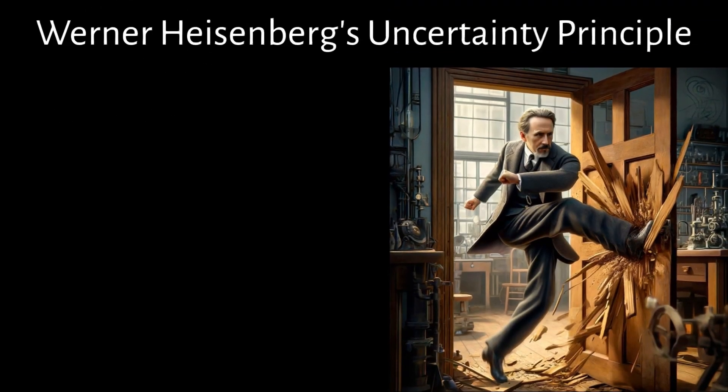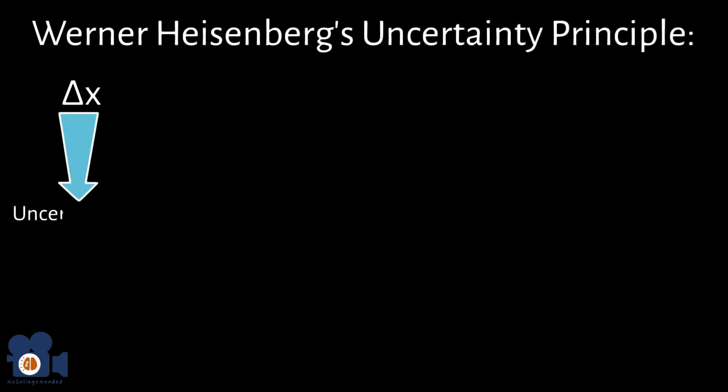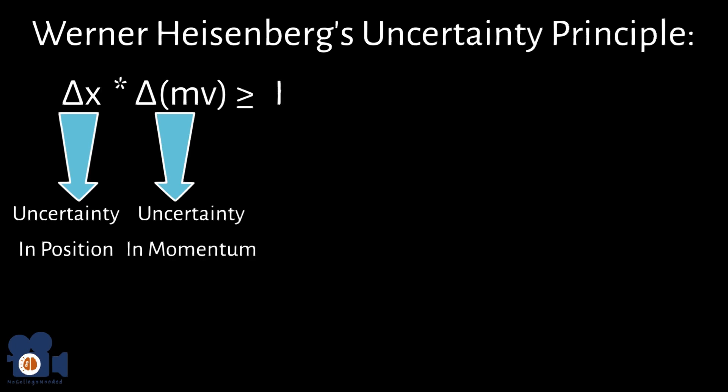Then Werner Heisenberg enters the arena. His uncertainty principle asserts that the more precisely we know a particle's position, the less precisely we can know its momentum and vice versa. He went on to prove it with a straightforward equation. The equation is delta x, the uncertainty in position, times delta mv, the uncertainty in momentum, is greater than or equal to Planck's constant divided by 4 pi.